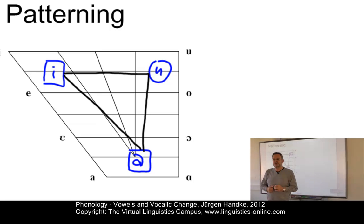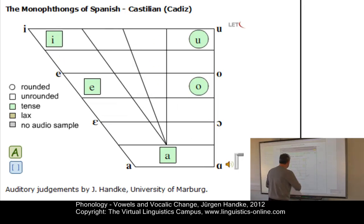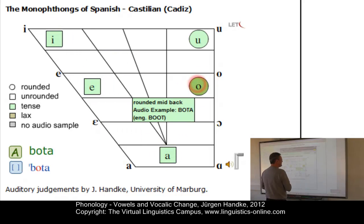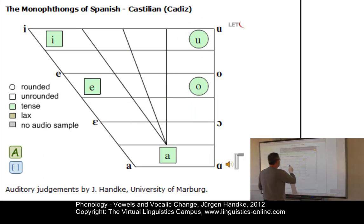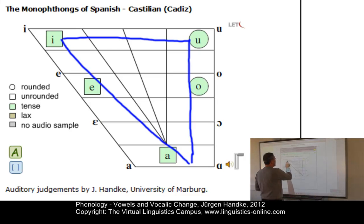I will now present two vocalic patterns — one consisting of five vowels and one consisting of seven vowels — taken from the Virtual Linguistics Campus Language Index: Spanish with five vowels and Romanian with seven vowels. Here we have Spanish with five vowels: vida, peso, paso, bota, puro. We have a nice triangular pattern with a central vowel at the bottom and two front vowels, each with a back vowel counterpart.